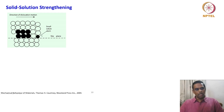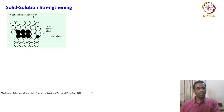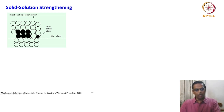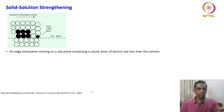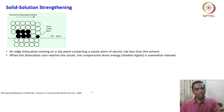Now the question is: having the small solute atom in this position, what are all the consequences? We know what kind of stress field surrounds an edge dislocation. When the solute atom is small compared to the solvent atom, an edge dislocation moving on a slip plane containing a solute atom of atomic size less than the solvent — when the dislocation core reaches the solute — the compressive strain energy is somewhat relieved.